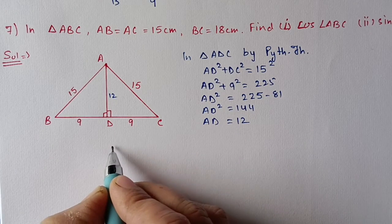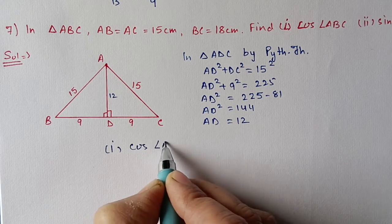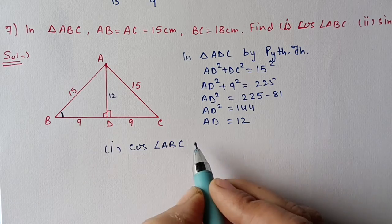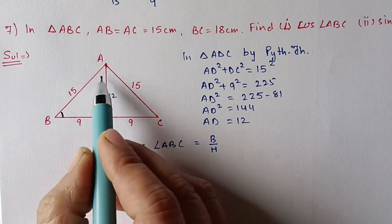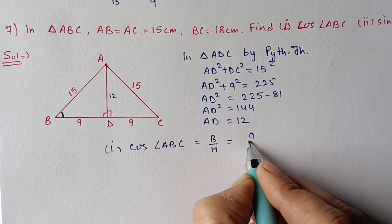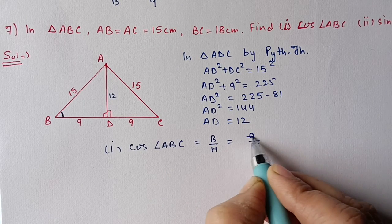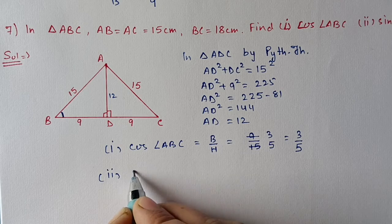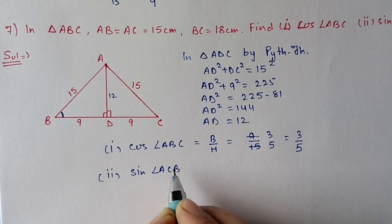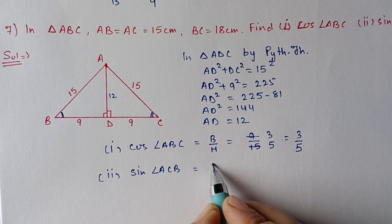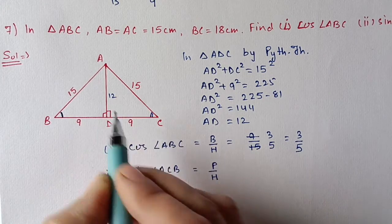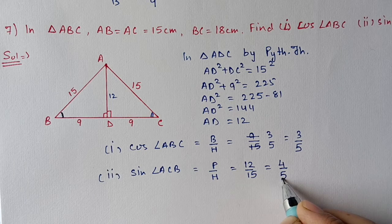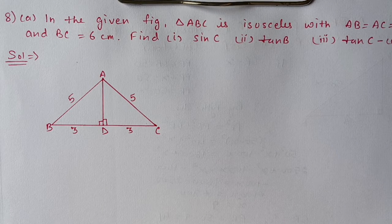9 squared is 81, which we shift to the other side: AD² equals 225 minus 81 equals 144, so AD equals 12. For cos angle ABC, cos means base upon hypotenuse. For angle B, base is BD which is 9 and hypotenuse is AB which is 15, so cos∠ABC equals 9 upon 15, which simplifies to 3 by 5. For sin∠ACP, sin is perpendicular by hypotenuse: perpendicular is AD which is 12 and hypotenuse is AC which is 15, giving 12 upon 15, which simplifies to 4 by 5.